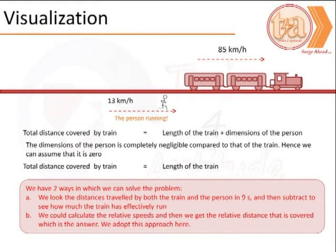However, given that the dimension of the person is extremely small, we can neglect that. Therefore, the distance covered by the train is nothing but the length of the train itself.